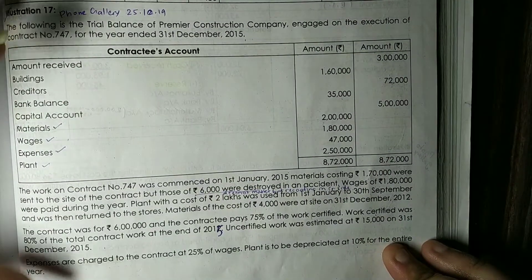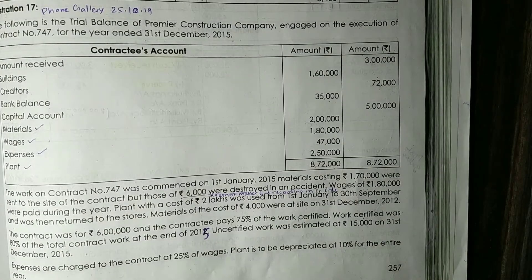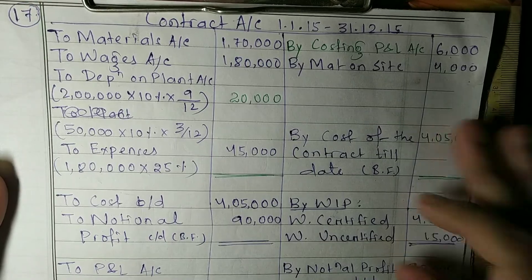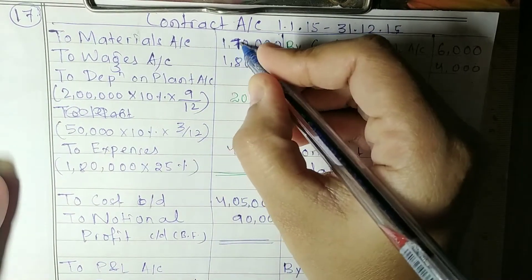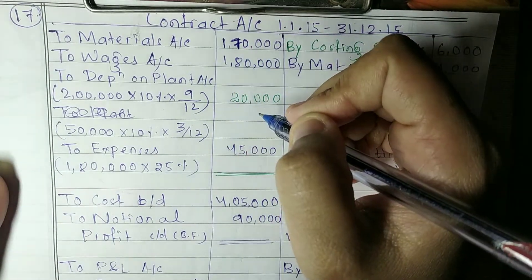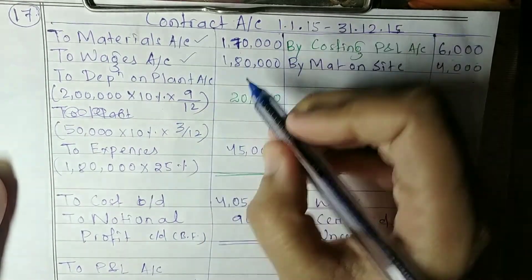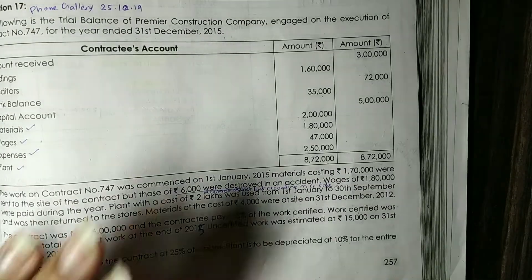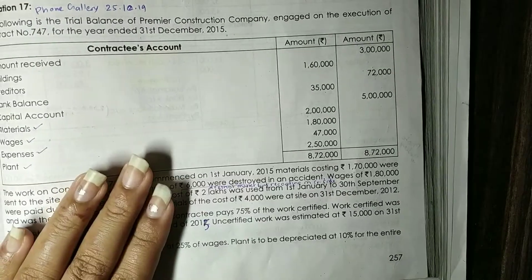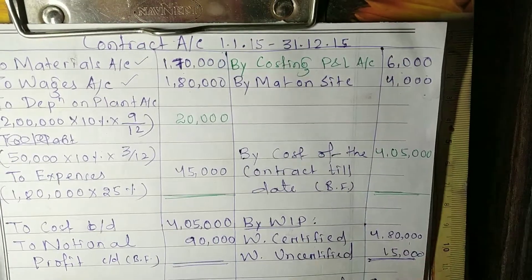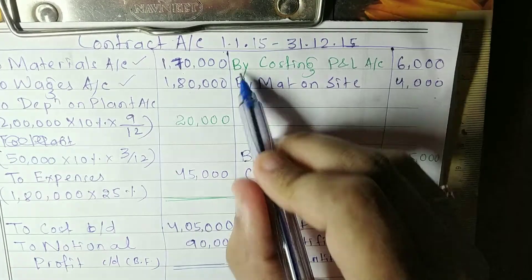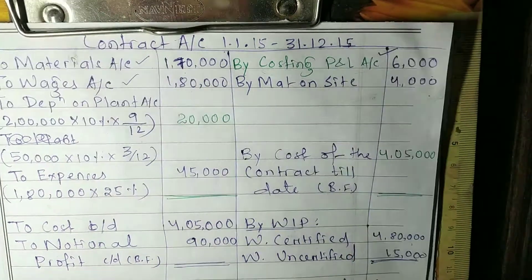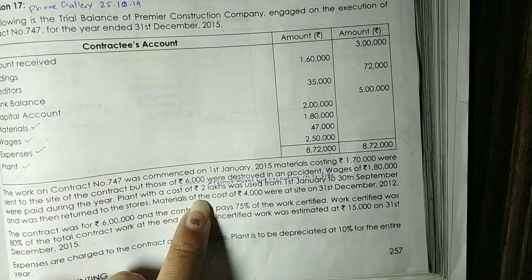Now focusing on the solution: in the contract account, materials sent to site are Rs. 1,70,000. Wages are Rs. 1,80,000. The Rs. 6,000 destroyed material is a very important point — in the exam, any destruction is chargeable to the Costing P&L account. So this will appear as 'by Costing P&L account Rs. 6,000' on the credit side. Material on site Rs. 4,000 will also be written on the credit side.